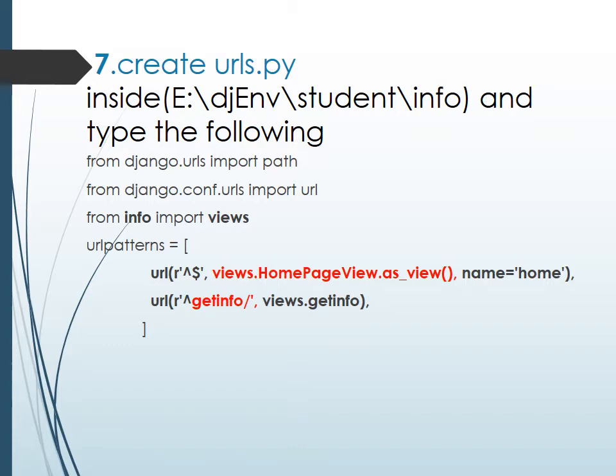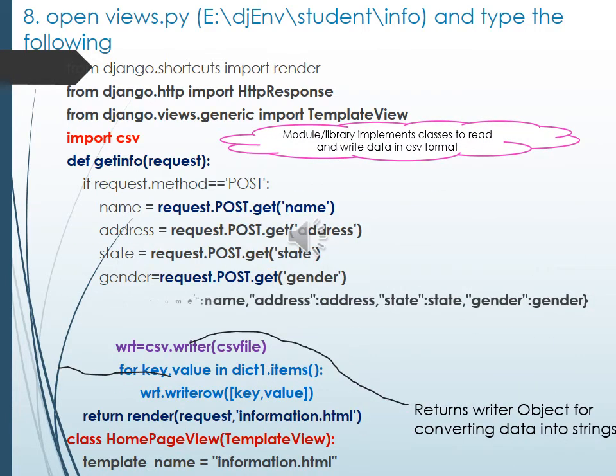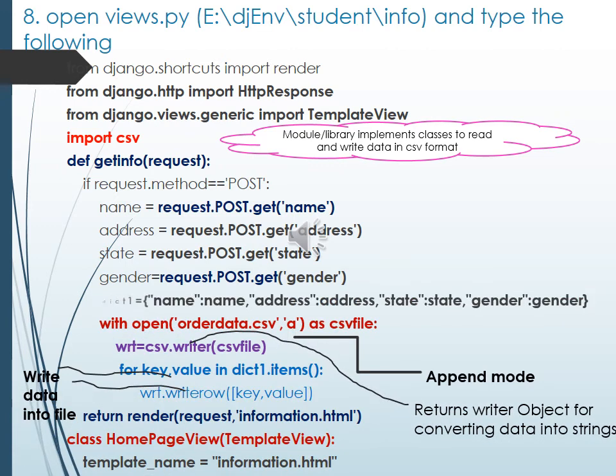First, import the CSV module which holds the classes and methods to perform write operations in CSV format. The function def get_informations handles form submission. When submitting the form, we get the data using request.POST.get() to retrieve name, address, state, and gender. This data is stored in dictionary format with the variable name dict1.